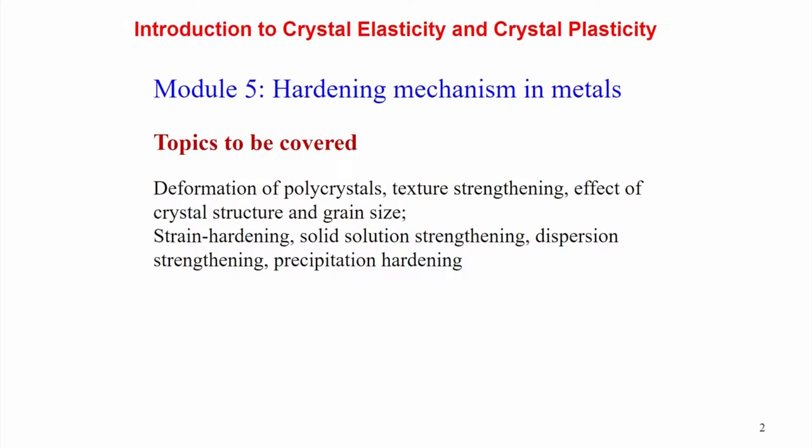This module will focus on the deformation of polycrystals, structure strengthening — meaning whether the microstructure has any strengthening effect — the effect of crystal structure and grain size on metal strength, strain hardening, solid solution strengthening, dispersion strengthening, and precipitation hardening. These are the typical hardening mechanisms that exist in metals, used to explain the increasing strength level of a material in the plastic deformation zone.